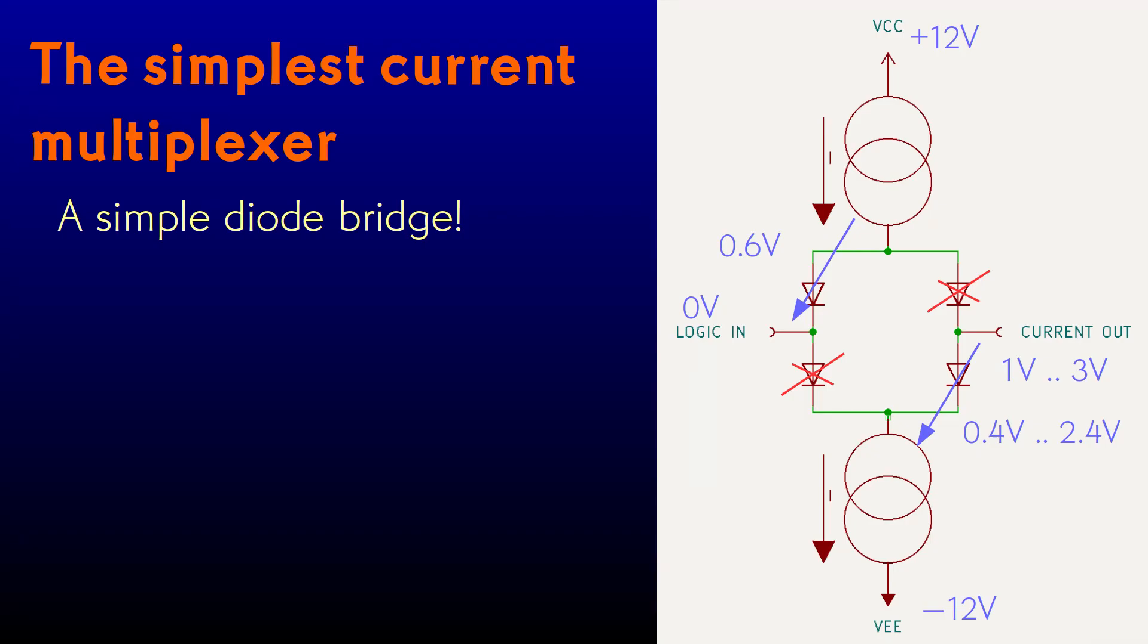We can use exactly the same reasoning to show that a logic low effectively connects the output to the lower current source. So the output sees either a constant current flowing in or else a constant current flowing out, which is exactly what we want.